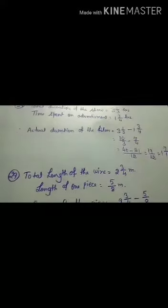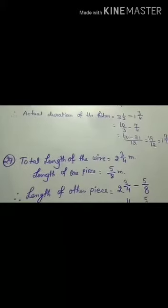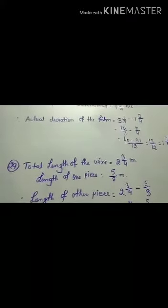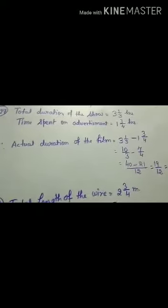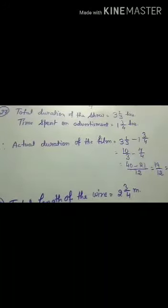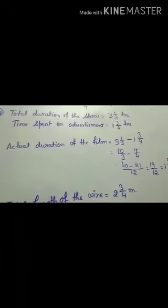Okay. In one day, a rickshaw puller earned rupees 137 and 1 by 2. Out of this money, he spent 56 and 3 by 4 on food. How much money is left?